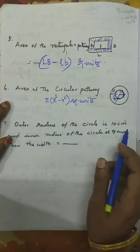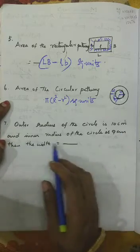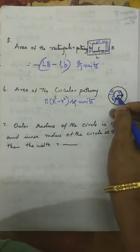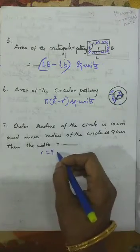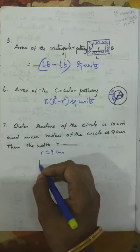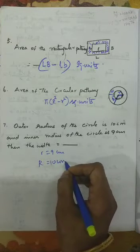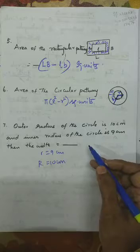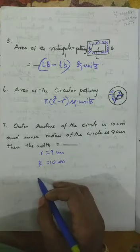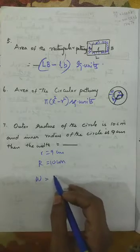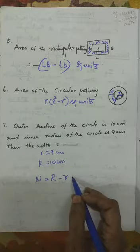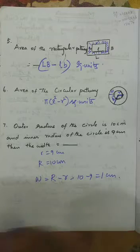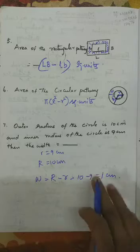For a circular pathway example: outer radius R is 10 centimeters and inner radius r is 9 centimeters. The width W equals R minus r, which is 10 minus 9 equals 1 centimeter. So the width of the circular path is 1 centimeter.